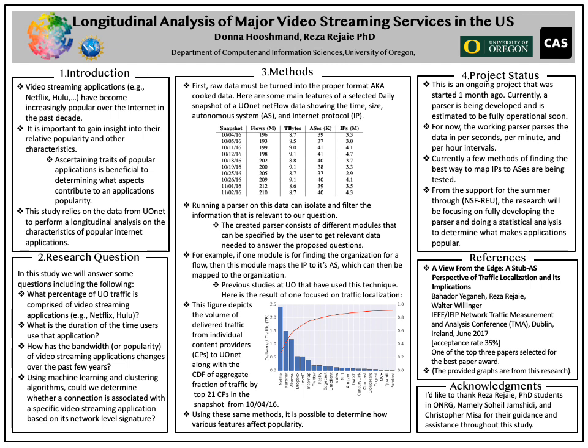As for the methods being used, first raw data must be turned into the proper format, which we will call cooked data. Running a parser on this data can isolate the data that is relevant to our question. The created parser consists of different modules that the user can specify. For instance, since we are only interested in the data that UO is receiving, the first module will filter out the direction of the flow. This can be done by either checking if the destination IP matches a UO IP or by checking the ingress port number.